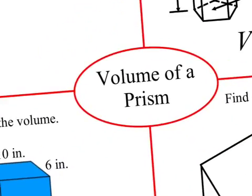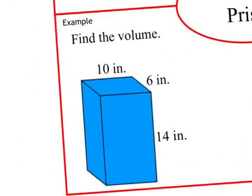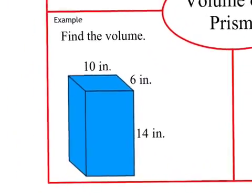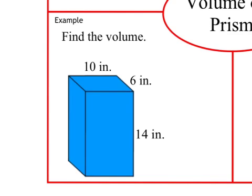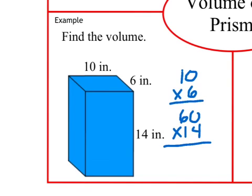Let's go ahead and take a look at one just like that. Here we have a prism. The width is 10, the length is 6, and the height is 14. So, we'll go ahead and multiply 10 times 6, which is 60, and 60 times 14 is 840. This is going to be inches cubed. Because we're talking about volume here, all our answers are going to be cubed.